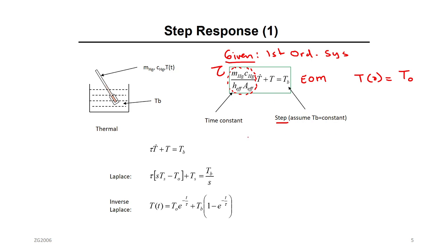What we're looking for is to find and draw the transient response. There are two methods: one is the long method — solve everything from the start, get the solution, then draw it using MATLAB or sketching. There is another short solution using the initial value and final value theorem, which I will do in the next video.